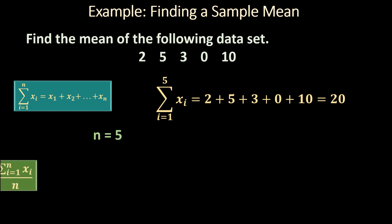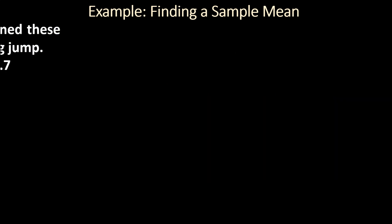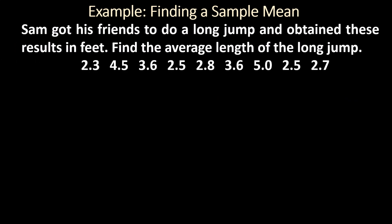To find x-bar, we divide the sum by n. Here, n is 5. So x-bar is 20 divided by 5, which equals 4.